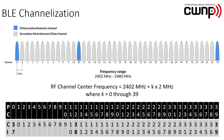BLE, or Bluetooth Low Energy, is a little different. Instead of using 1 megahertz channels, BLE uses channels that are wider — 2 megahertz wide. It still starts at 2402 MHz and goes to 2480 MHz, but the channels are 2 megahertz wide instead of 1 megahertz wide. There are 40 channels total: three primary advertisement channels and 37 secondary advertisement or data channels.